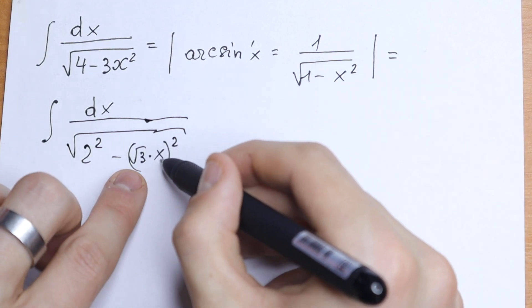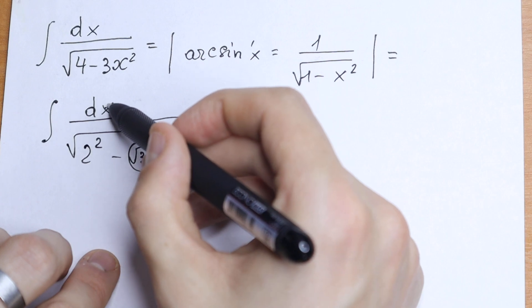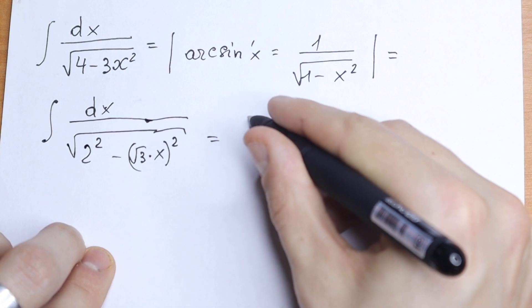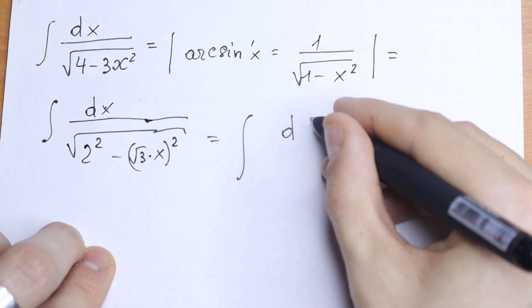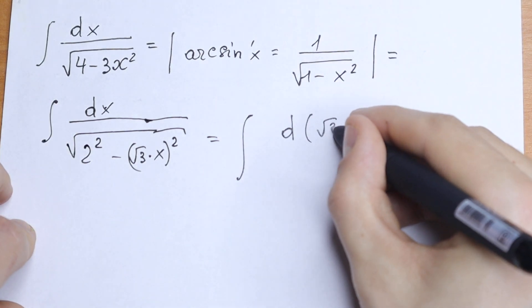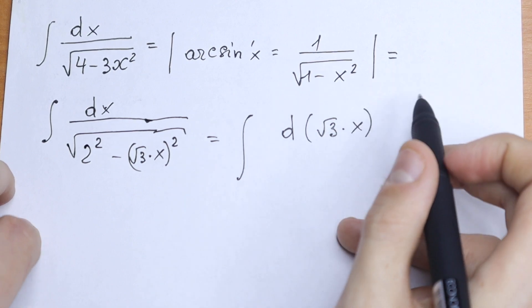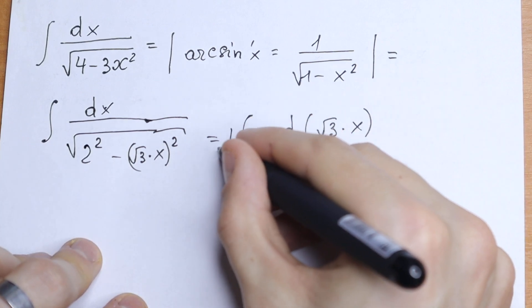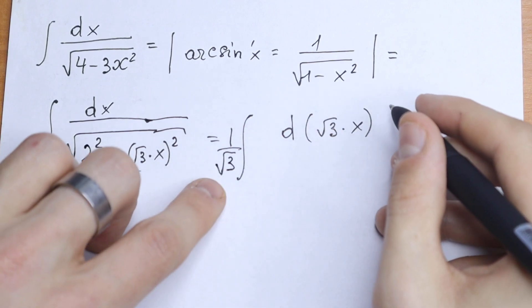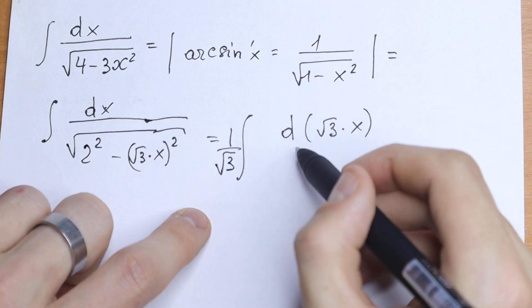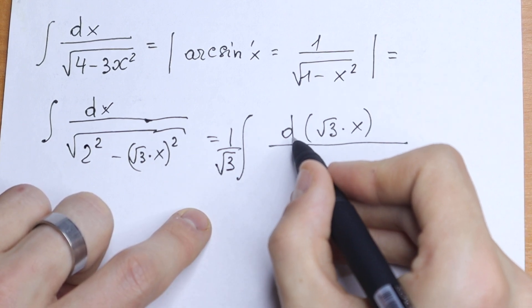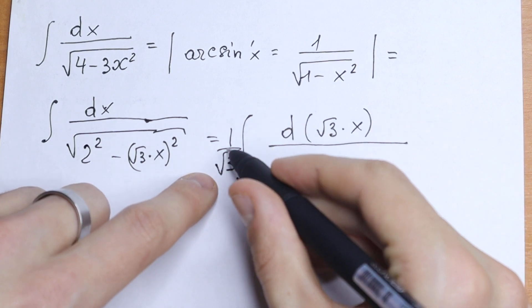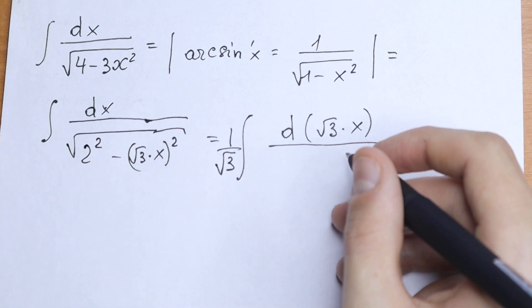Let's put square root of 3 times x into our differential sign. So if we write d(√3·x) instead of dx, taking that derivative gives us a factor of square root of 3. To keep nothing changed, we write 1 over square root of 3 in front of the integral.